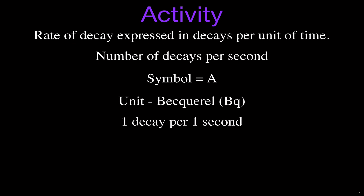So what is one Becquerel? One Becquerel is simply equal to one decay per second. What it really means is that this is one over S — the number of decays per second — which you'll sometimes see written as S to the minus one. We don't write one over S or S to the minus one; we just simply write the Becquerel.